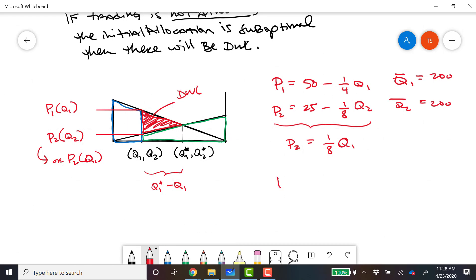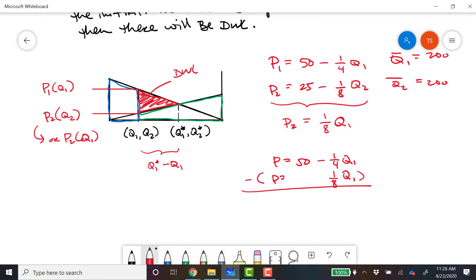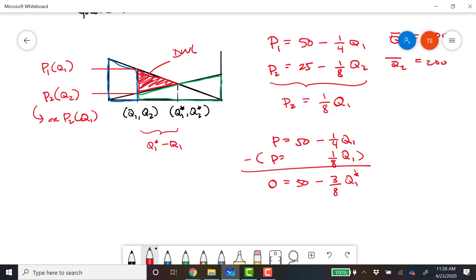Now we solve supply and demand. P equals 50 minus 1 fourth Q1. P equals 1 eighth Q1. Subtract it off. Zero equals 50 minus 3 eighths of Q1 star. So 50 times 8 thirds tells us that Q1 star is equal to 400 over 3, which is 133 and a third. So there's our Q1 star.